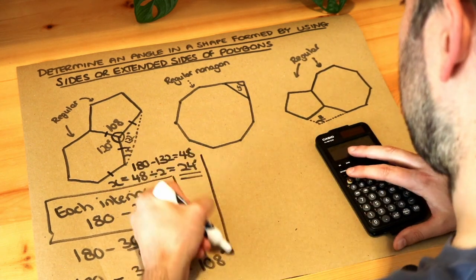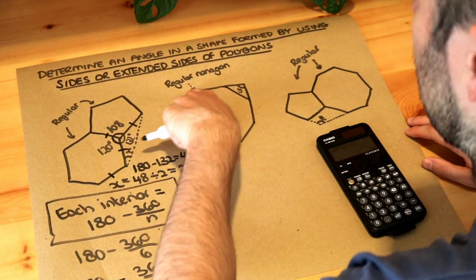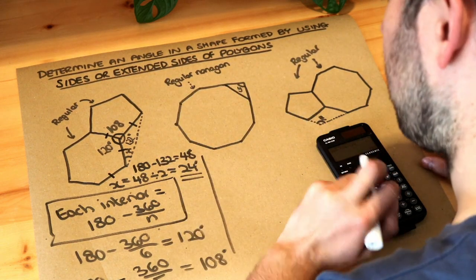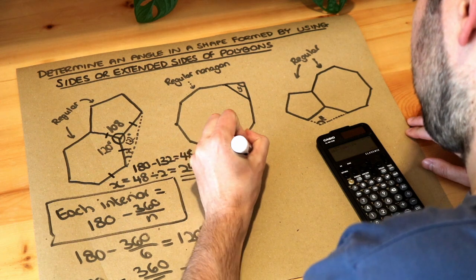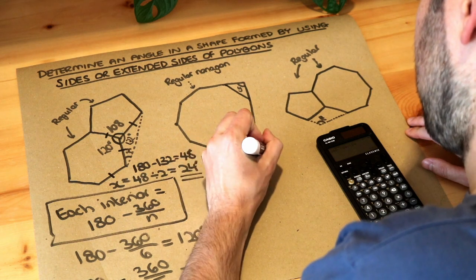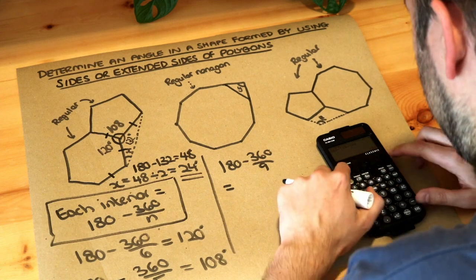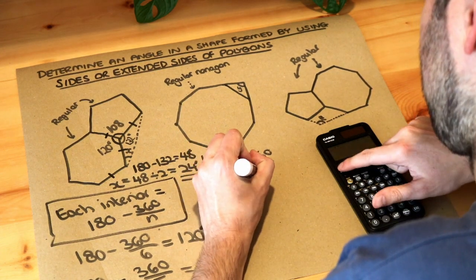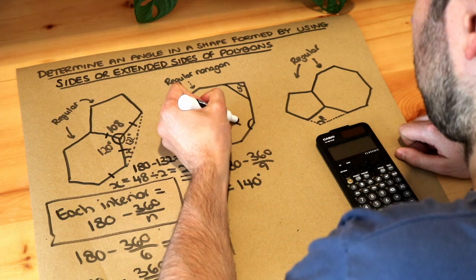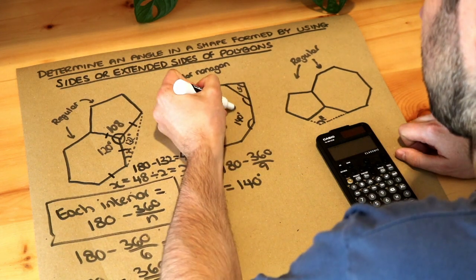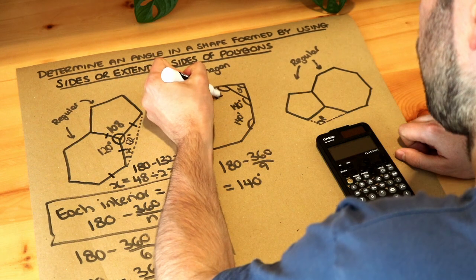For the next one, we've got a regular nonagon - that's 9 sides. Using the formula again: 180 minus 360 over 9 gives 140 degrees. So all the interior angles of this nonagon are 140 degrees.